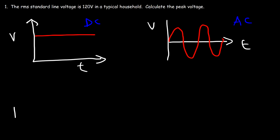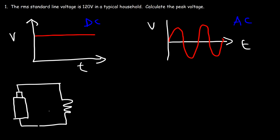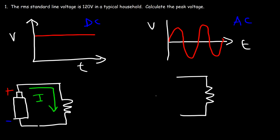A DC current is available if you use a device like a battery. If you connect the battery across a resistor or even a light bulb, current flows in one direction — the conventional current flows from the positive terminal of the battery towards the negative terminal. Now if you connect a resistor across a 120-volt source found in a typical household, the current constantly reverses direction.